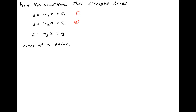Let's denote the three given lines by 1, 2, and 3 respectively. Note that the gradient of the first line is equal to m1, the gradient of the second line is equal to m2, and the gradient of the third line is equal to m3.